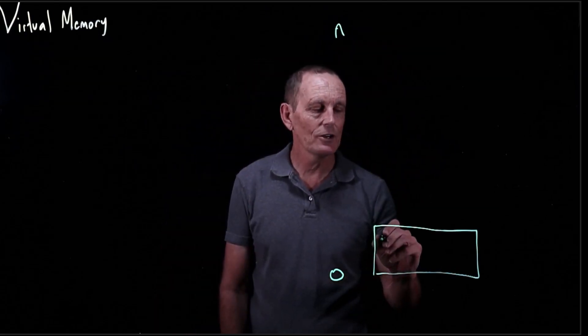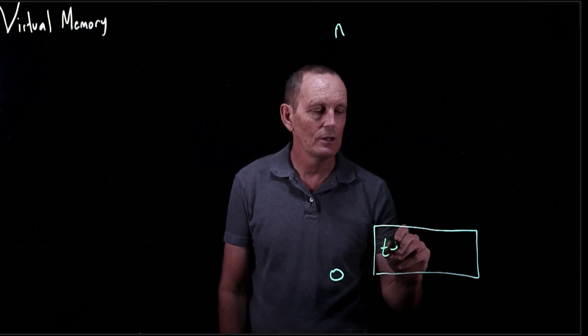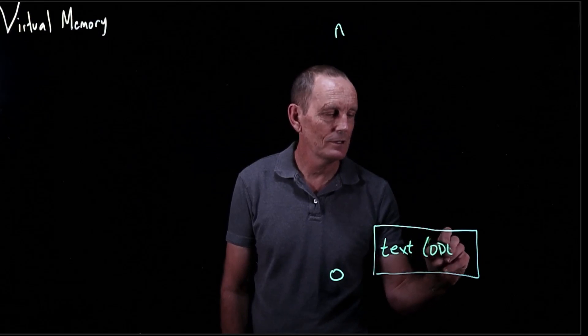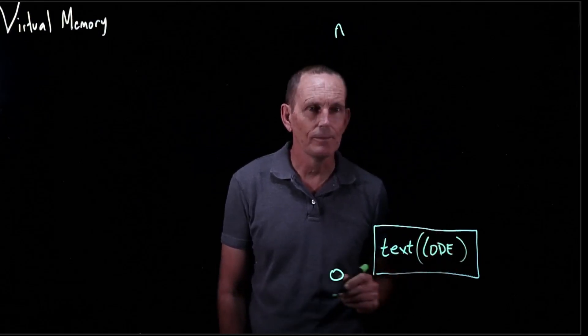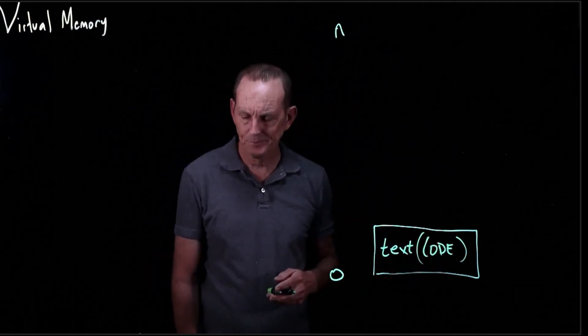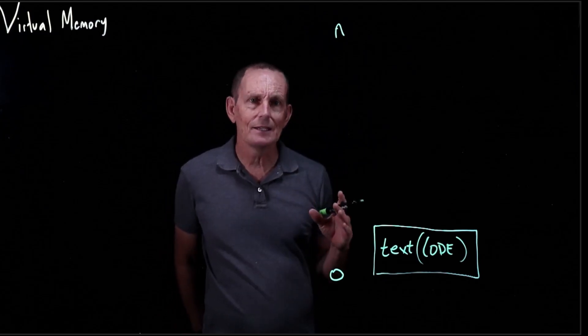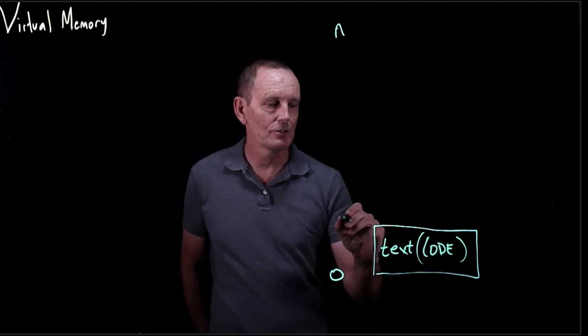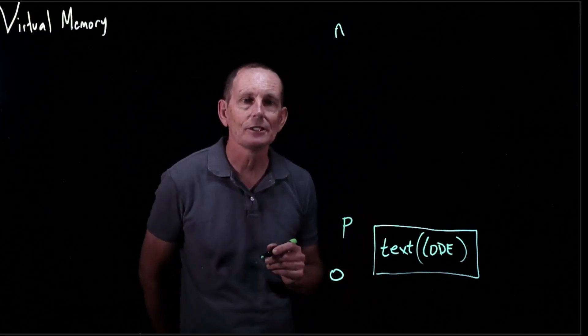So what we have is our code, and it's often called text for historical reasons. So that's the code. And that is usually of some fixed size. Okay, so this goes from, let's say, 0 to P for some P.